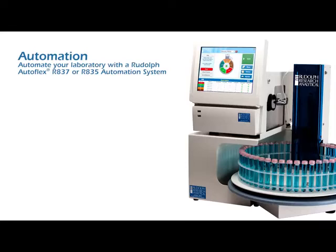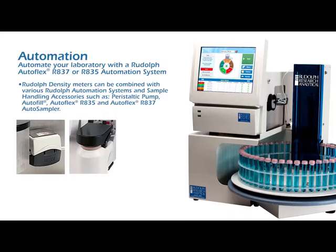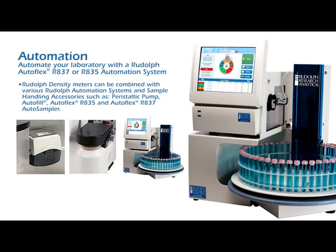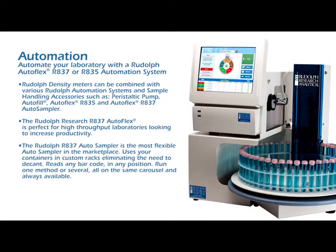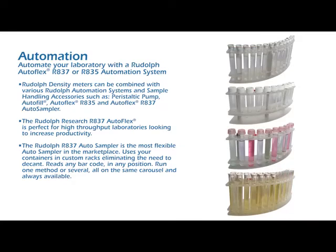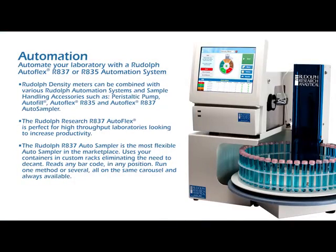Inserts directly into your bottle. Automate your laboratory with a Rudolph Autoflex R837 or R835 automation system. Rudolph density meters can be combined with various Rudolph automation systems and sample handling accessories, such as peristaltic pump, autofill, Autoflex R835, and Autoflex R837 autosampler. The Rudolph R837 Autoflex is perfect for high-throughput laboratories looking to increase productivity and is the most flexible autosampler in the marketplace. Uses your containers in custom racks, eliminating the need to decant. Reads any barcode in any position. Run one method or several, all on the same carousel and always available.